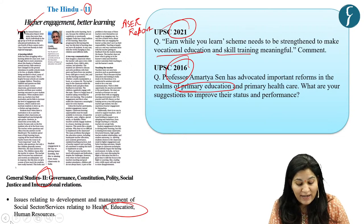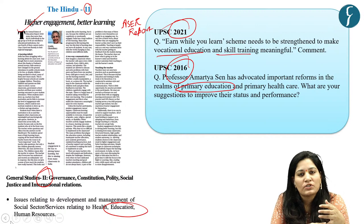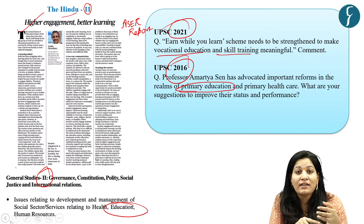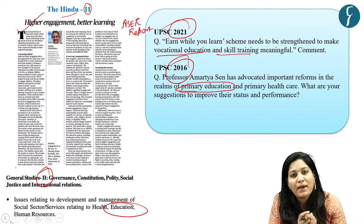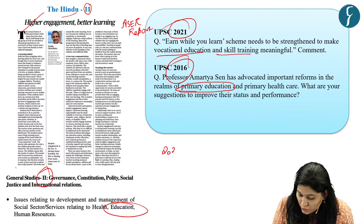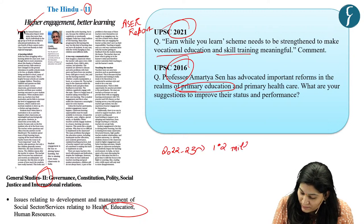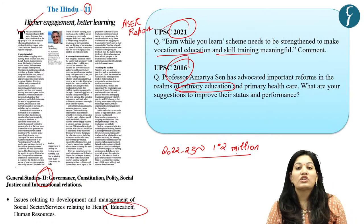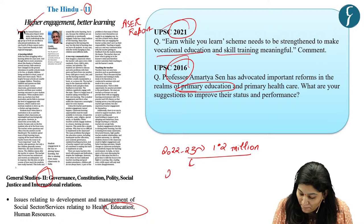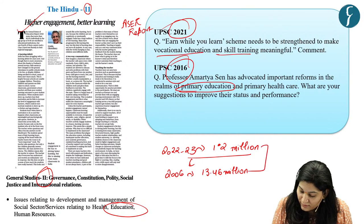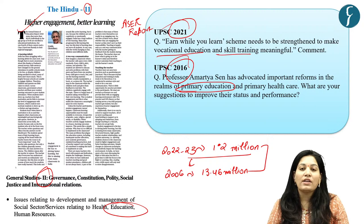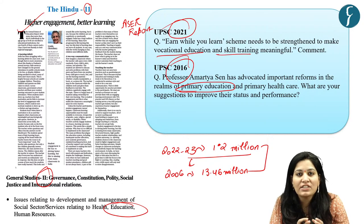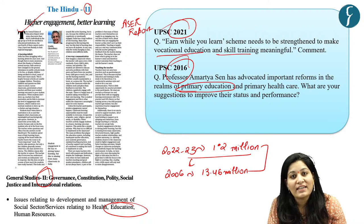India has made great strides in improving access to quality education by increasing school enrollment at the elementary level and decreasing dropout rates. In 2022-23, 1.2 million children were out of school, compared to 13.46 million at the 2006 level — a drastic reduction. These achievements have been boosted by government initiatives like the RTE Act 2009.